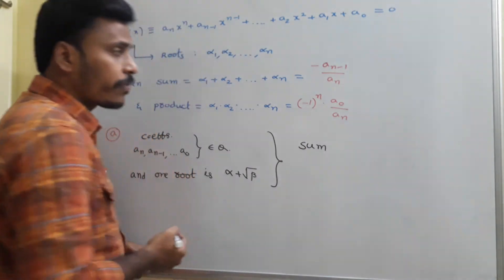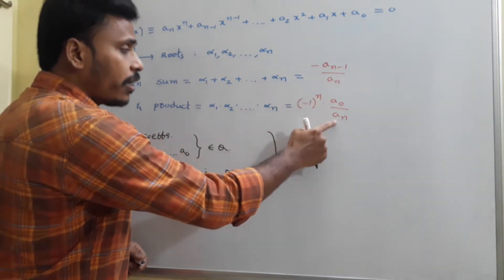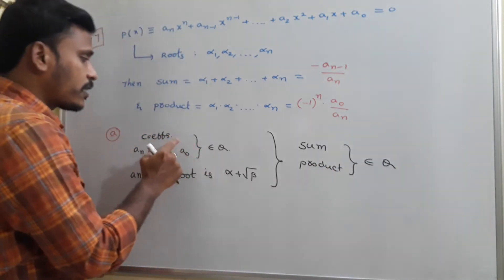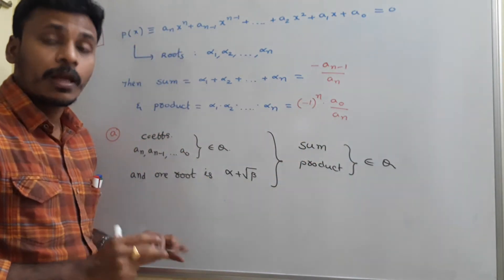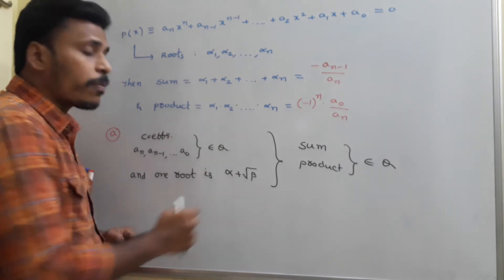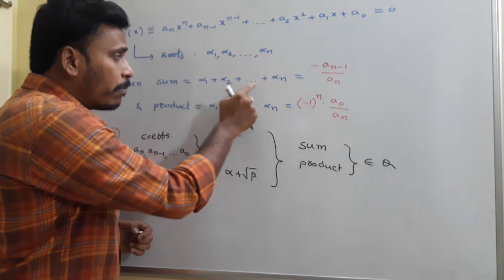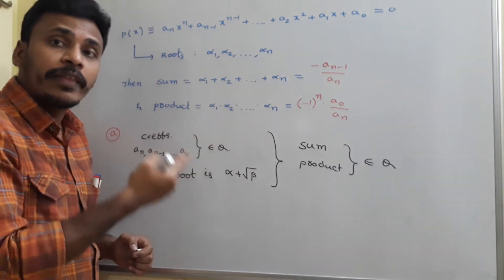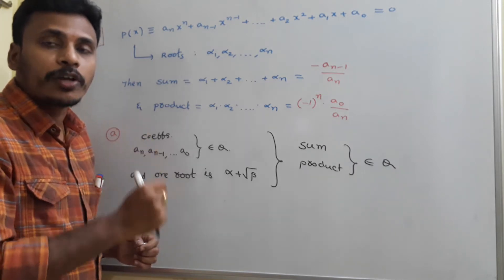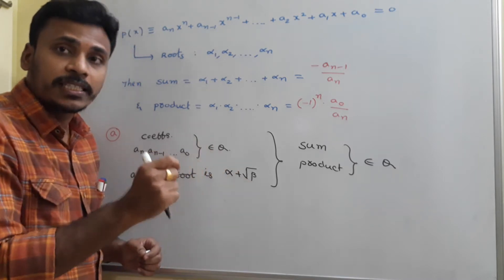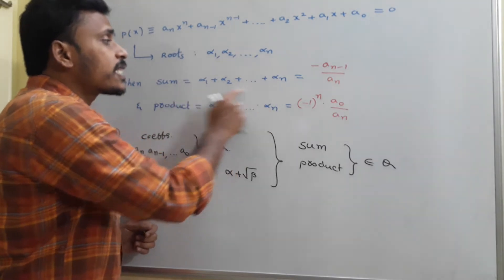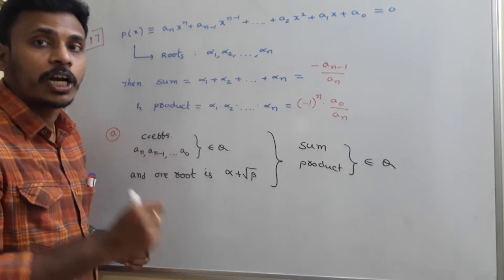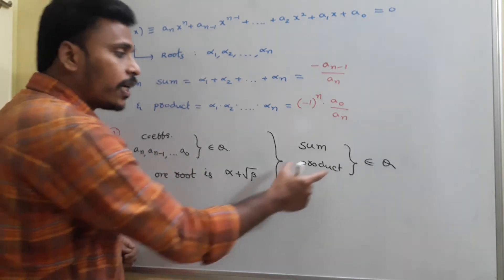All these coefficients are rational, so the product of the roots is also rational. Sum and product both belong to the rational numbers. Since one root among these n numbers is α+√β, and the sum of all these numbers is rational — since √β is not a rational number — to maintain the sum as rational, another root must be of the form α-√β. That is my conclusion.